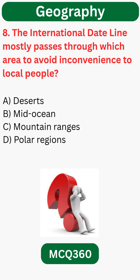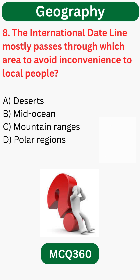The international date line mostly passes through which area to avoid the inconvenience to local people? B. Mid-ocean.